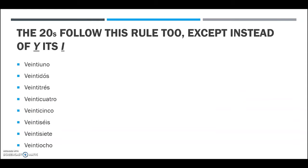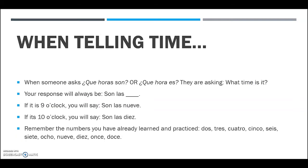The twenties follow this same formula with one exception: instead of having three separate words — the tens, the word 'and', and the ones — we squish them all together into one word. We also replace 'e' with 'i'. So instead of saying 21 as three words, we have 'veintiuno', then 'veintidós', 'veintitrés', 'veinticuatro', 'veinticinco', 'veintiséis', 'veintisiete', 'veintiocho' — all mushed together.